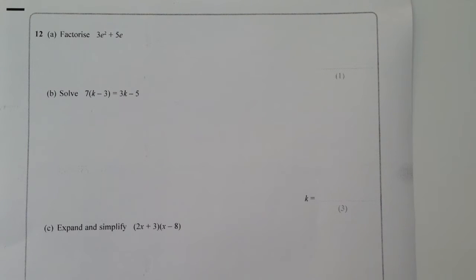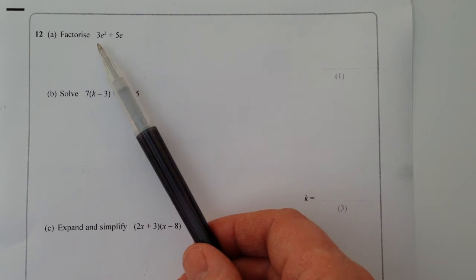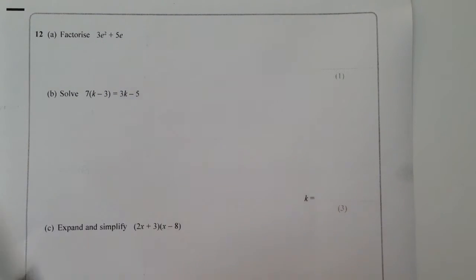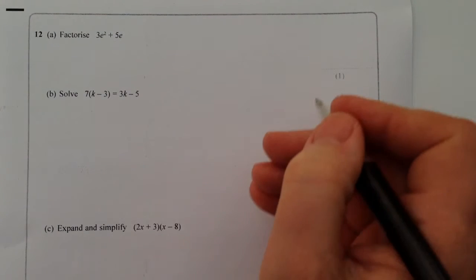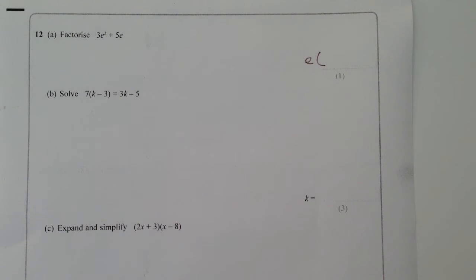And then the next thing we do is we look at the letters, and we've got e squared, which means e times e, and then we've got e on its own. So the common letter that will divide into both e squared and e is e itself. So it's actually the only thing that we can take out of this factorisation.